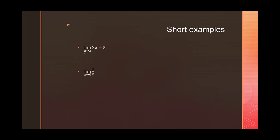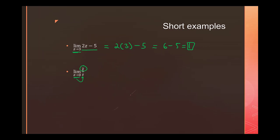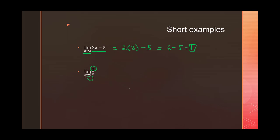Let's look at some examples. For the limit as Z approaches 3 of 2Z minus 5: notice 3 is in the domain of this function, so we use the direct substitution property and get 2(3) minus 5 equals 1. For our second limit, the limit as Z approaches 0 of the conjugate of Z over Z, we run into an issue — we can't just plug in 0 because we'd be dividing by 0 over 0.